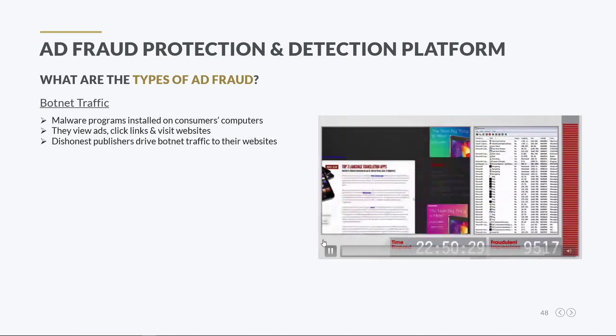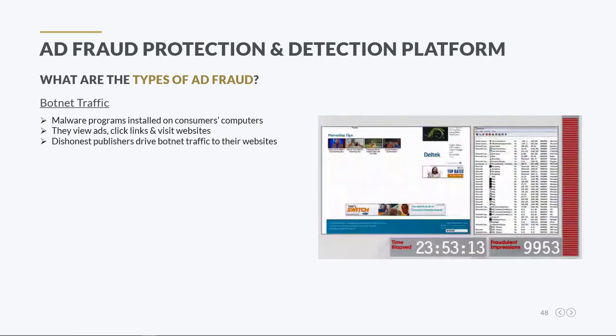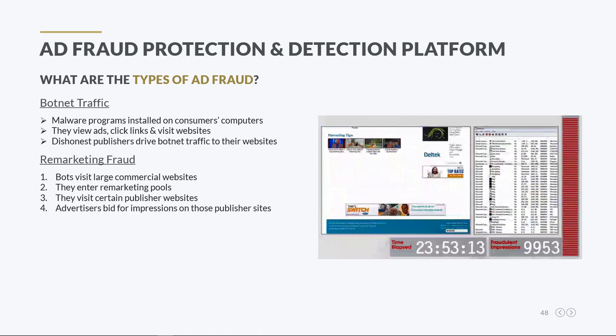Having the right ad fraud protection in place can make all the difference. Remarketing fraud is the practice of using botnets that visit many websites, especially those of large commercial companies, to enter their remarketing pools. Next, those bots visit certain publisher websites so that advertisers would bid for those impressions. Therefore, dishonest publishers can generate high CPMs and make a great deal of ad revenue.